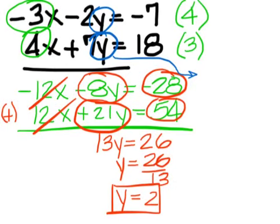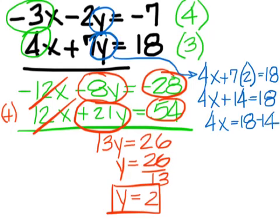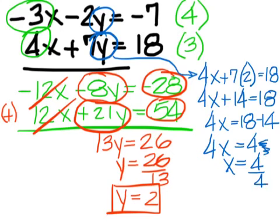So, we'll end up with 4x plus 7 times 2 equals 18. 4x plus 14, which you're going to have to move to the right side. And that's 4x equals 4. Whoops, no x in that one. And 4 divided by 4 is 1.